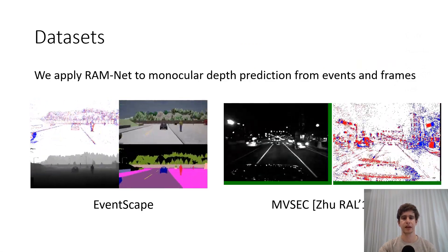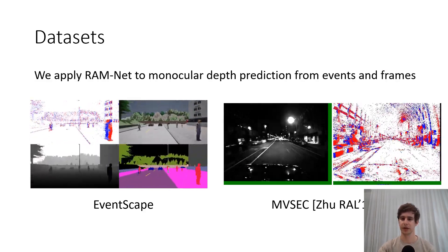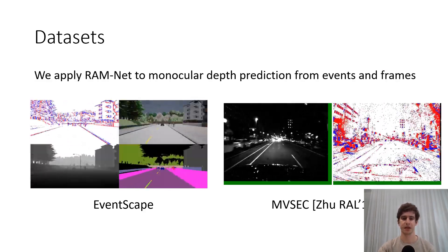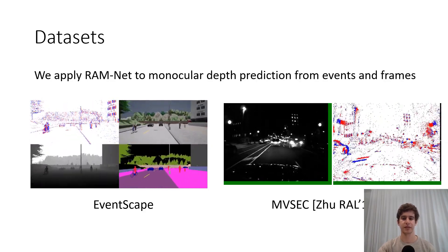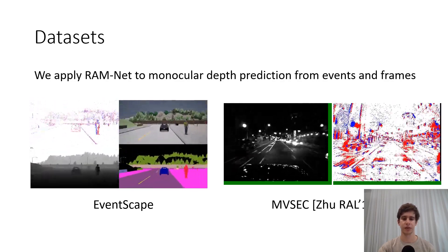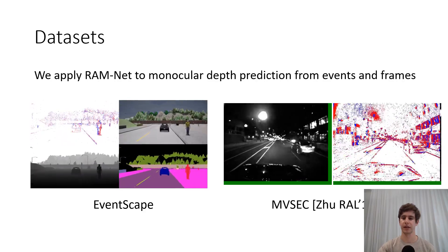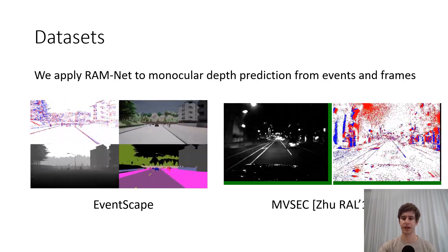We validate our approach by applying RAM-Net to monocular depth prediction from events and frames. For this, we use two datasets. The Eventscape is a synthetic dataset recorded in CARLA, which we release in this work. The multi-vehicle stereo event camera dataset instead features real data recorded with a DAVIS sensor at night.